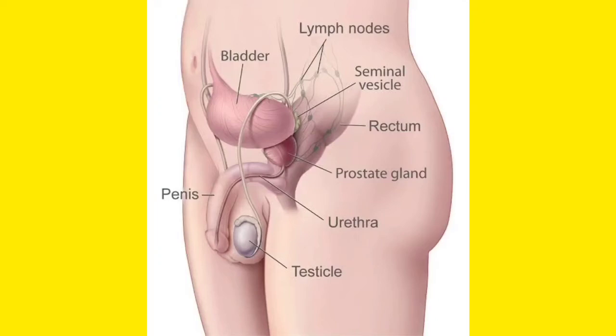The male reproductive organ is the long cylindrical organ, that is the penis. The tip of the penis has the glans penis, which is the stimulatory part. The penis also has corpora cavernosa and corpora spongiosum, which are spongy tissues.